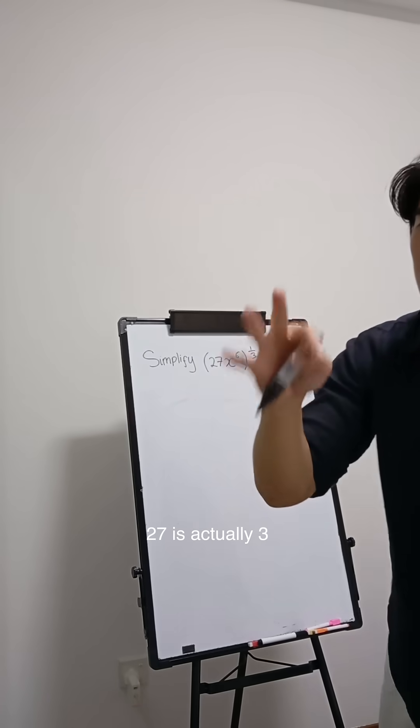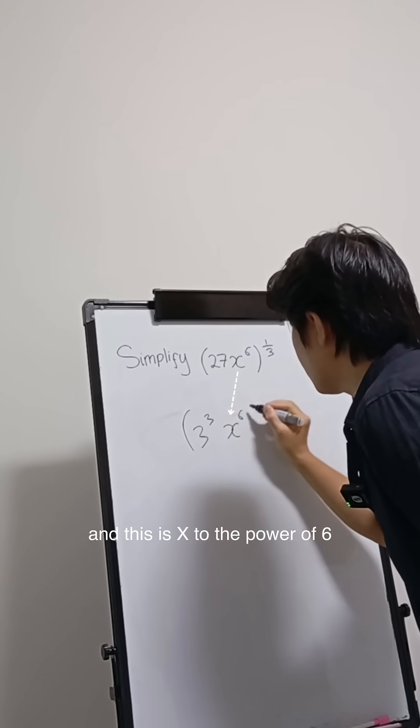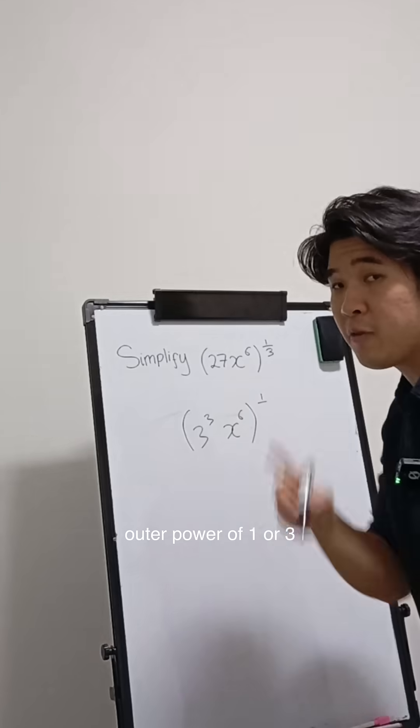Okay, so in this case, 27 is actually 3 to the power of 3. So we have 3 to the power of 3, and this is x to the power of 6, and we have an outer power of 1/3.